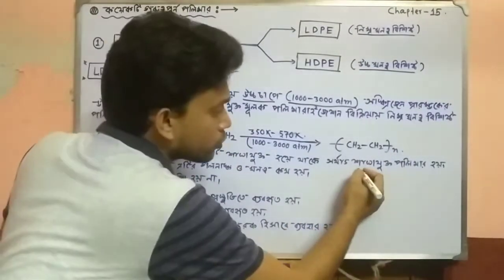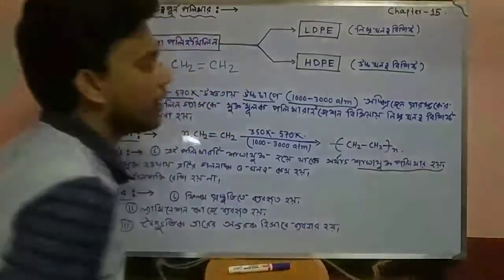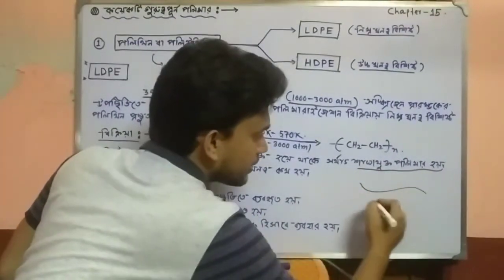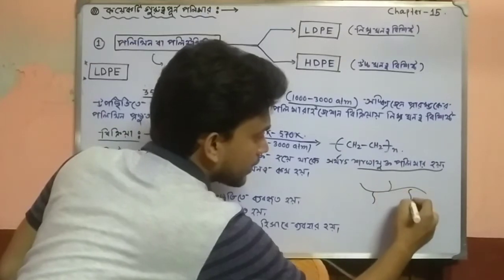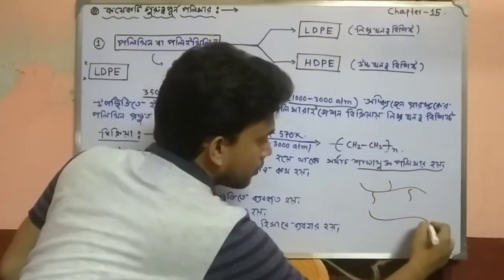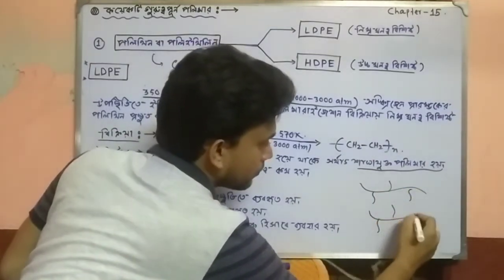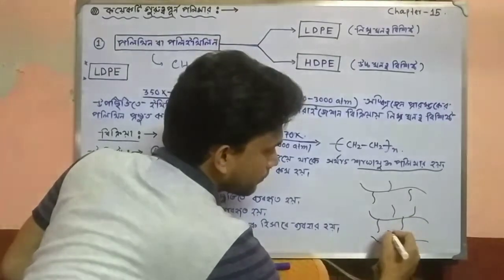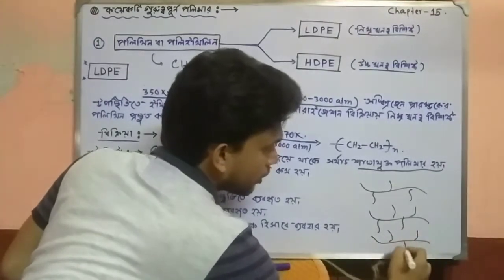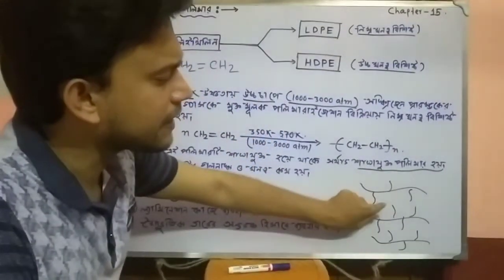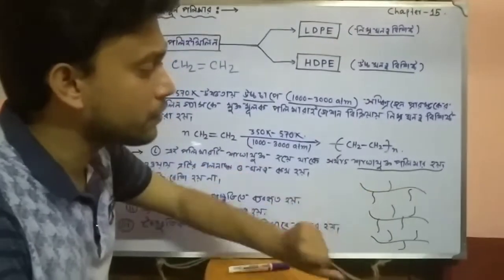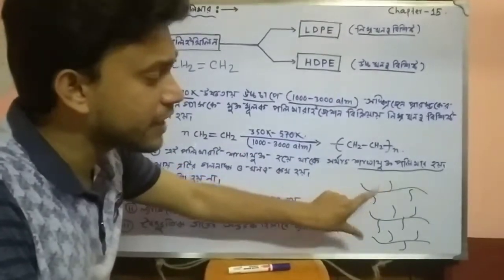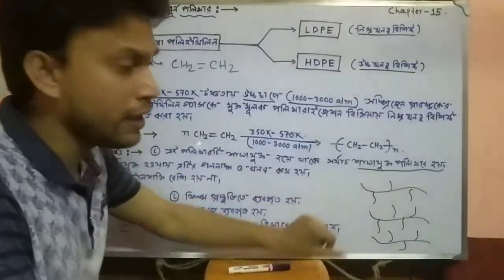This is a branched polymer. You can see this branched polymer. We can see with these things how much strength you have — the density is lower, or weak and weaker.